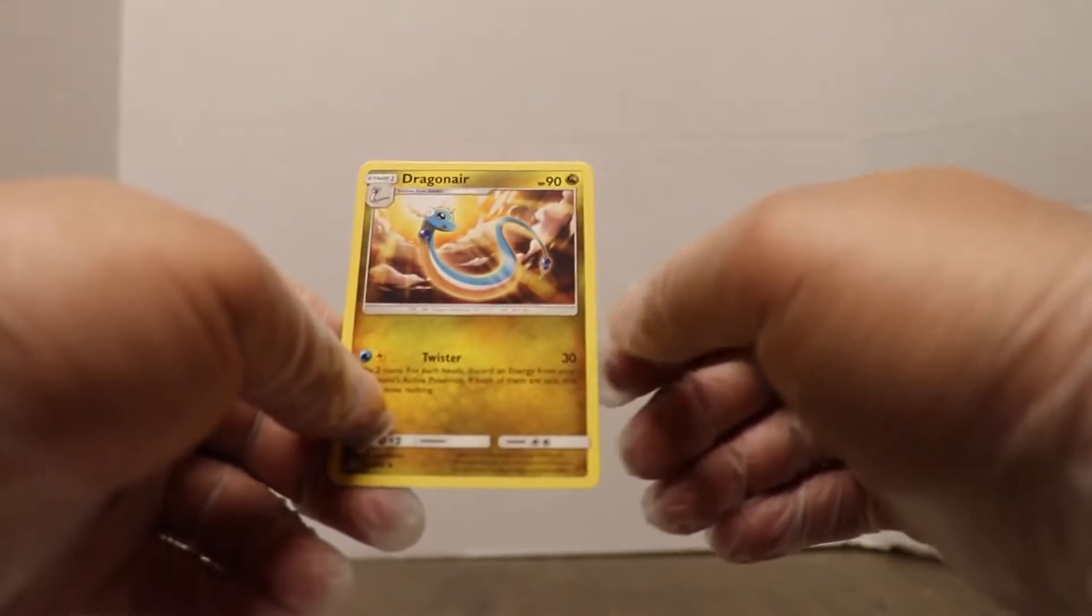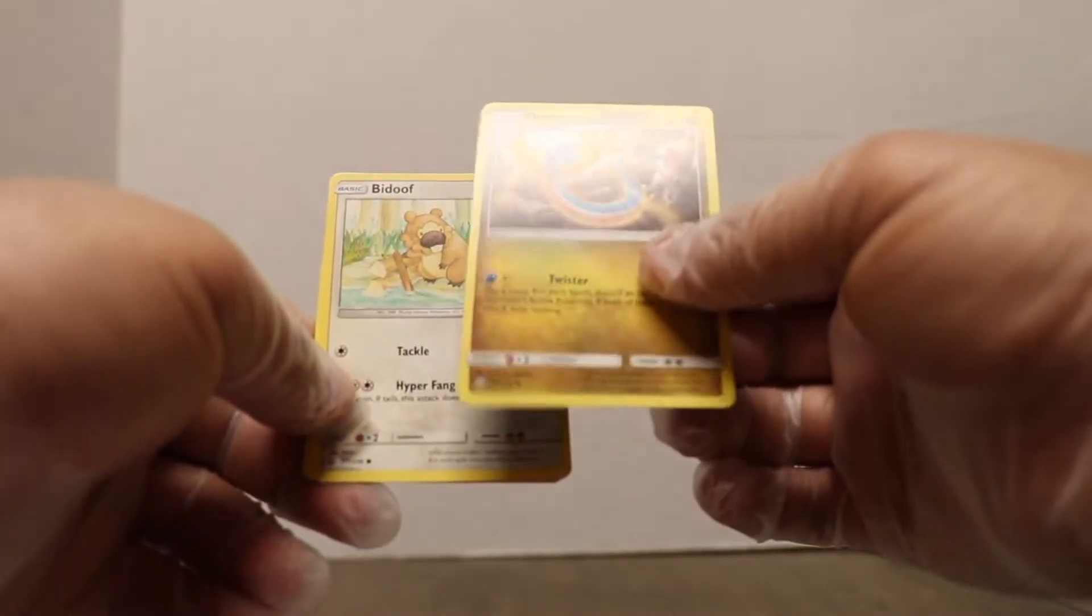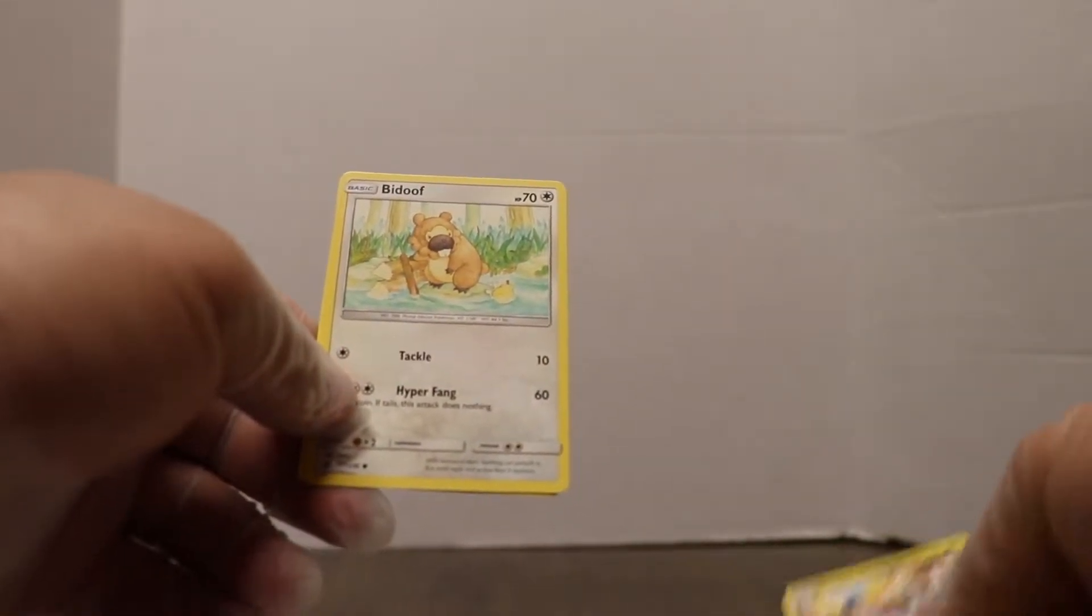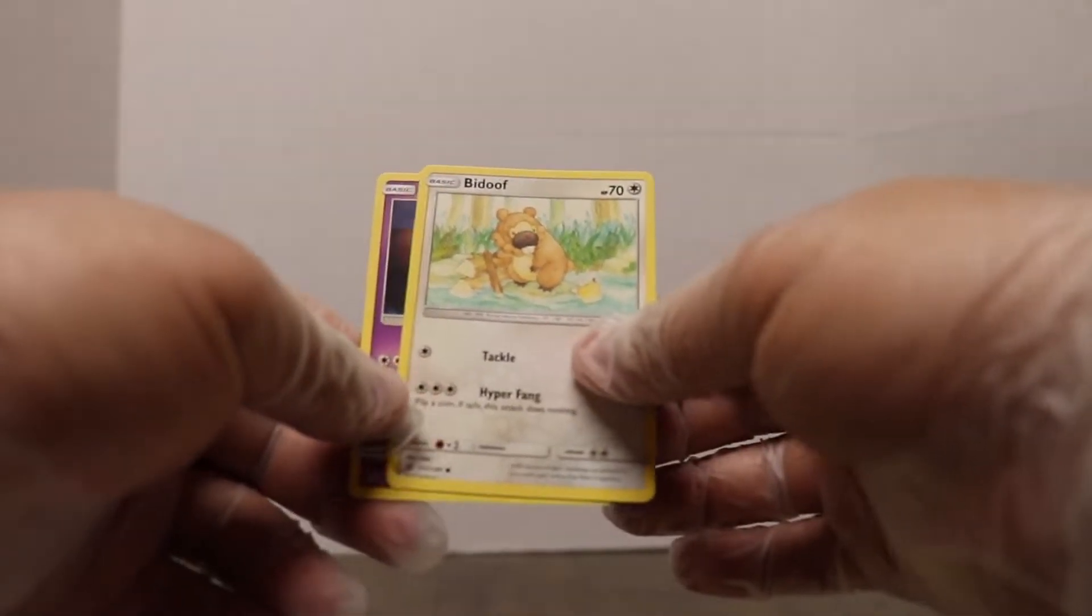Oh, we got a Dragonair. Right off the front one. Too bad it's not holo. But still, that's pretty nice. I was going to say neat nice. Nice.